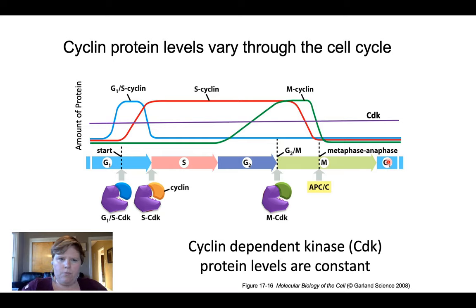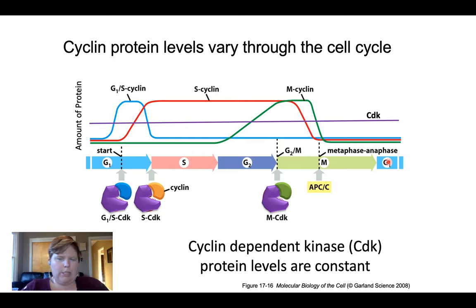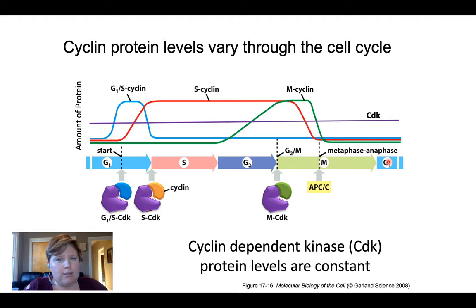Those checkpoints are specifically regulated by a kinase protein, which phosphorylates other things, which is dependent on these proteins called cyclins — so named because their concentration changes throughout the course of the cell cycle.